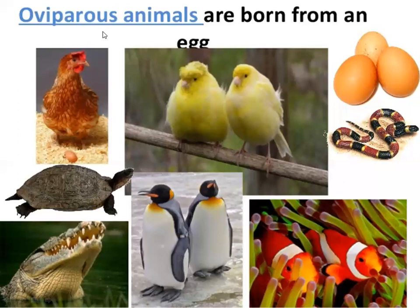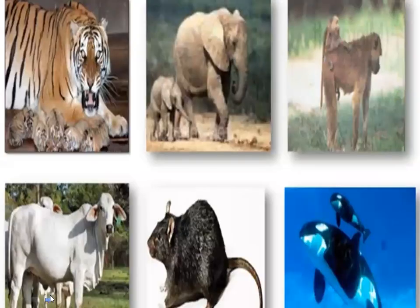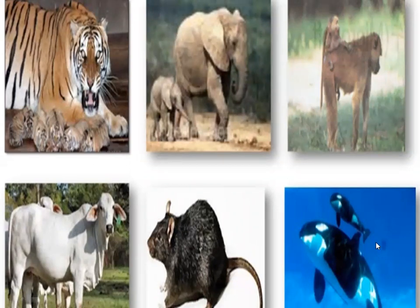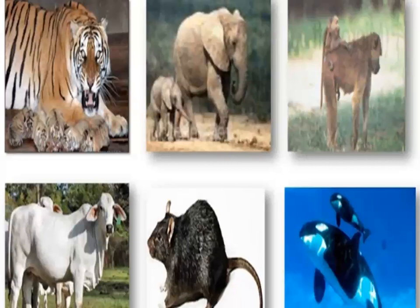There is a mammal which is oviparous — that is Ornithorhynchus, and the common name is duckbill platypus. They are mammals but they lay eggs. All other mammals — tiger, elephant, monkey, whale, rat, cow — give birth to young ones. These are called viviparous organisms.